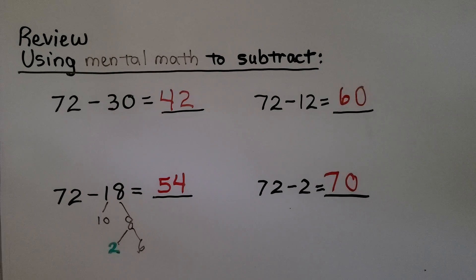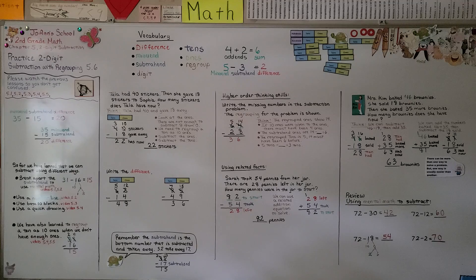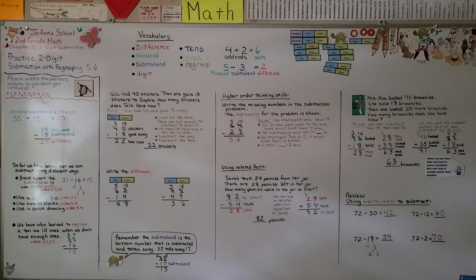So just remember, be careful that the subtrahend is the bottom number that is subtracted and taken away from the number above it. Our next lesson, 5.7, we're going to rewrite two-digit number sentences and do it for subtraction. Have a really nice day. Bye.